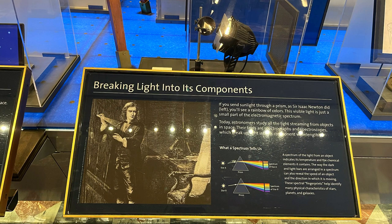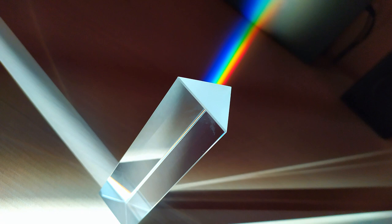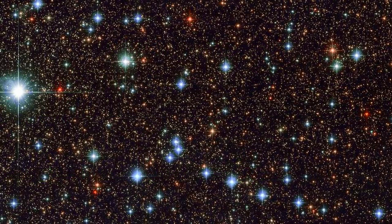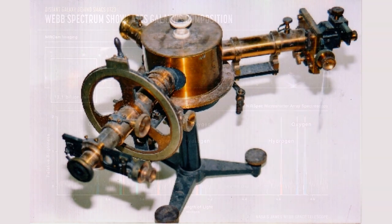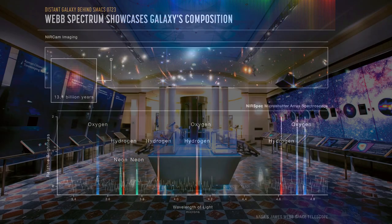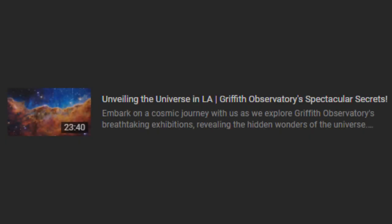This exhibit also explored the dispersion of light into its constituent colors, commonly observed when sunlight passes through a prism—it forms a beautiful rainbow of colors representing just a fraction of the electromagnetic spectrum. In modern astronomy, we examine the entire spectrum of light emanating from celestial objects with the aid of spectrographs and spectroscopes, which disassemble light into its constituent wavelengths. For an in-depth look into this process, be sure to check out the Beyond Visible panel featured in part one of the Griffith Observatory video.